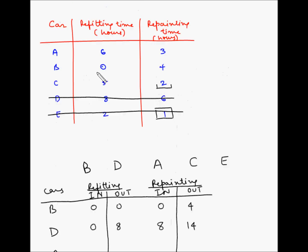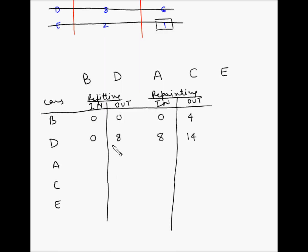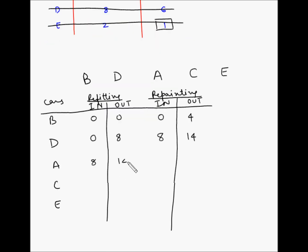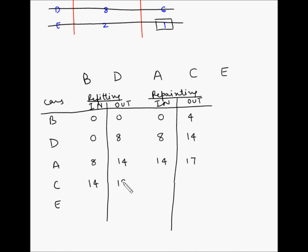For car A, refitting takes 6 hours. D is out of refitting at hour 8, so A enters refitting at hour 8 and is out at hour 14. A then enters repainting at hour 14, takes 3 hours, and is out at hour 17. Car C can enter refitting at hour 14, takes 5 hours, and is out at hour 19.